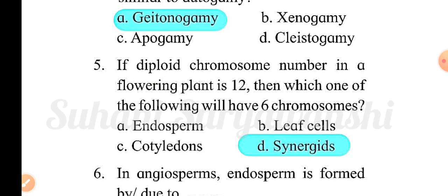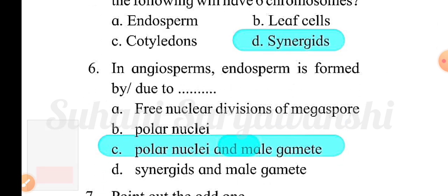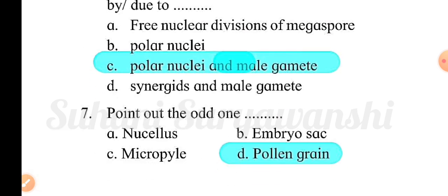Sixth question: in angiosperms, endosperm is formed by — option A: free nuclear divisions of megaspore; option B: polar nuclei; option C: polar nuclei and male gamete; option D: synergids and male gamete. The correct answer is option C, polar nuclei and male gamete. Seventh question — point out the odd one out: option A: nucellus; option B: embryo sac; option C: micropyle; option D: pollen grain. The correct answer is option D, pollen grain.